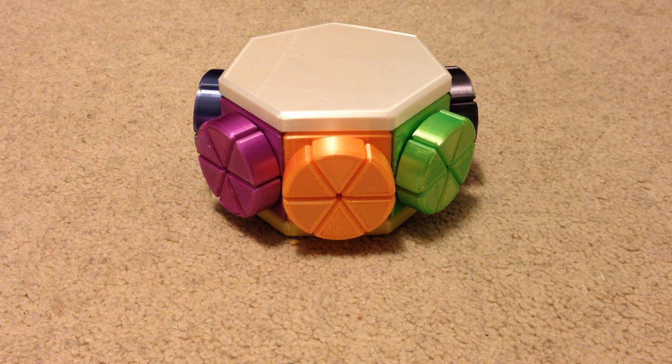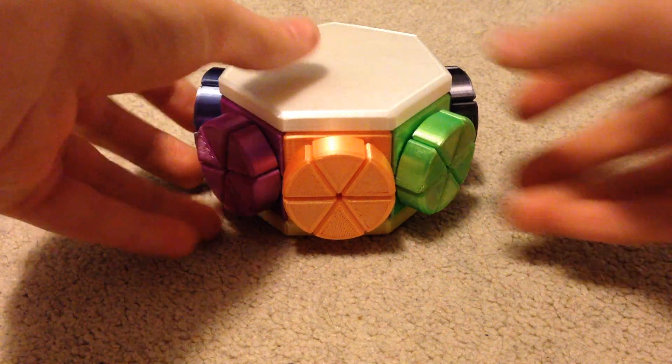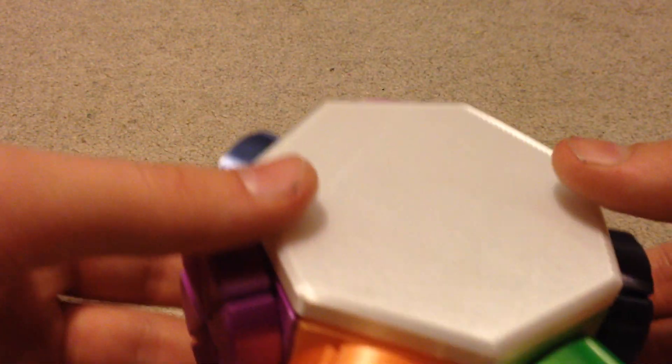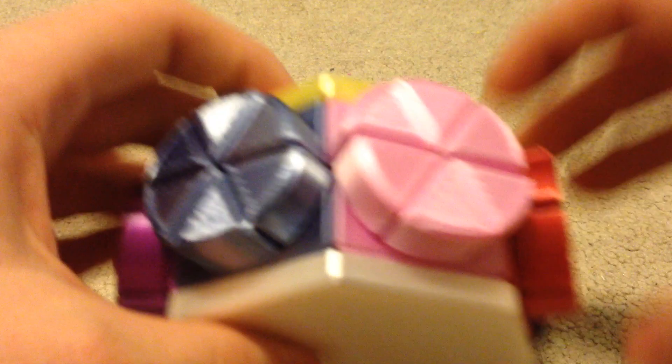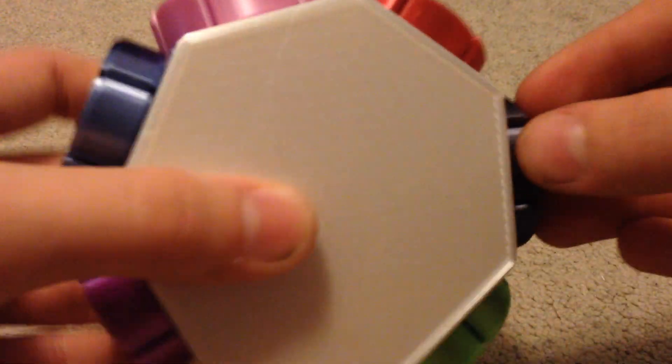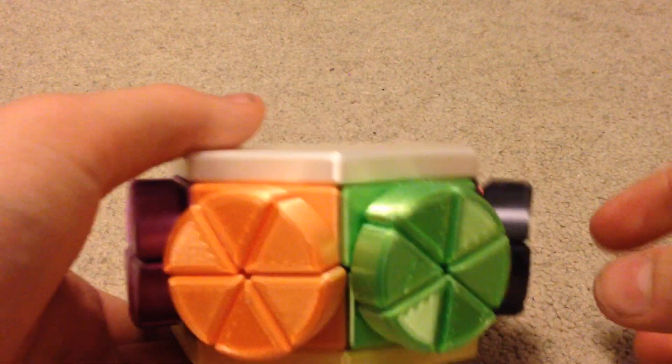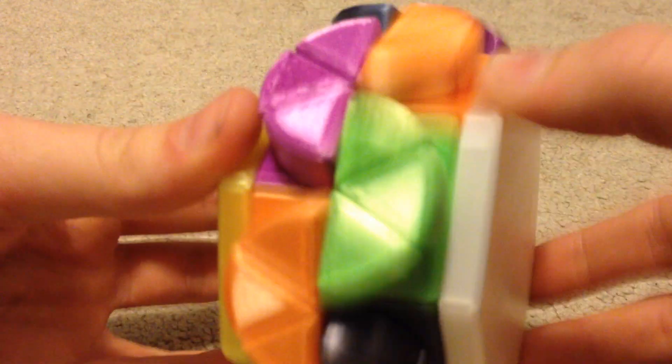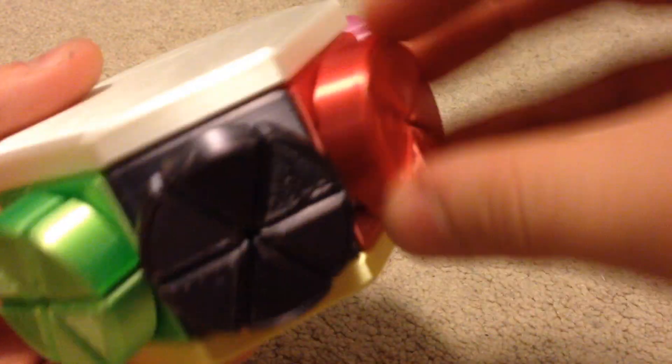So without further ado, I am back with another custom design that I made. This is another 3D printed puzzle. I call it the seven wheel puzzle, because I think you can see why. It is a heptagonal prism with a cylinder coming out of each side, and how it turns is you got the top and bottom halves turn, and also each of these wheels turn.